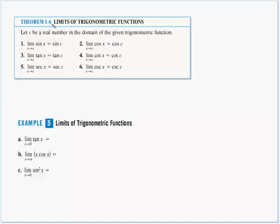Theorem 1-6 covers trig functions. For any real number c in the domain of the given trig function: the limit as x approaches c of sine x is sine c; the limit as x approaches c of cosine x is cosine c — and the same applies to the other four trig functions. Just try direct substitution first.